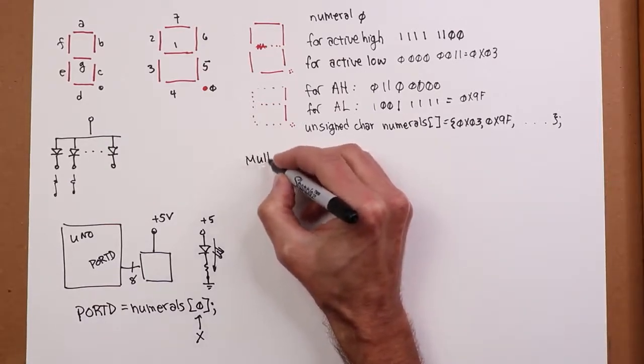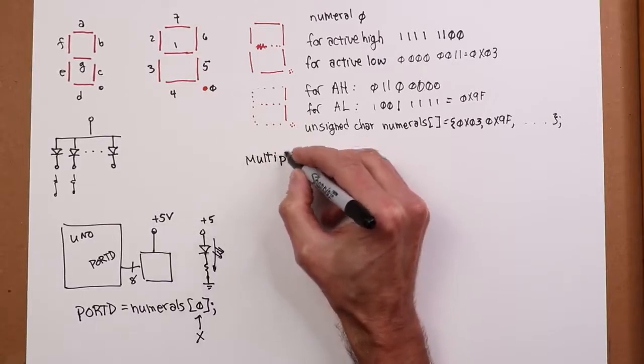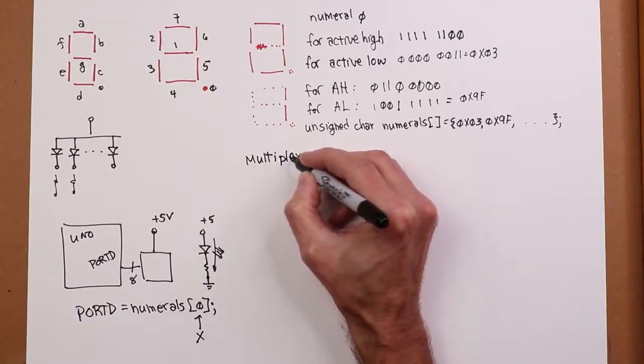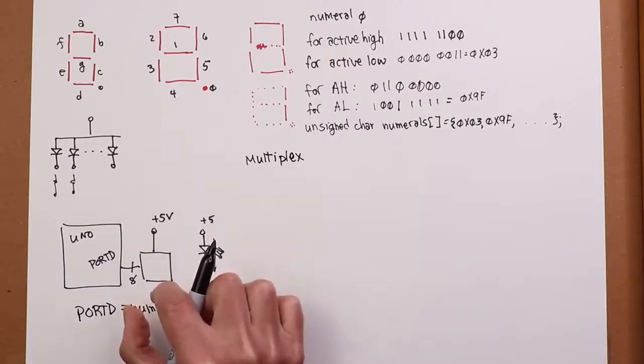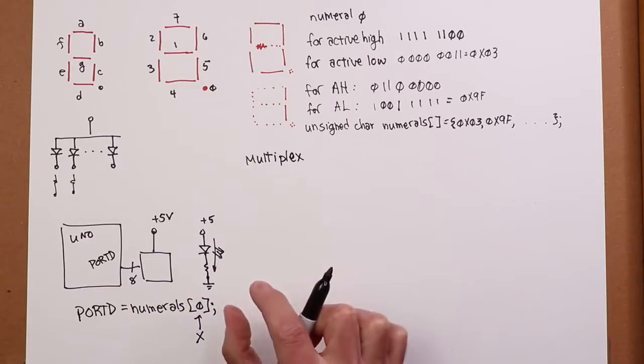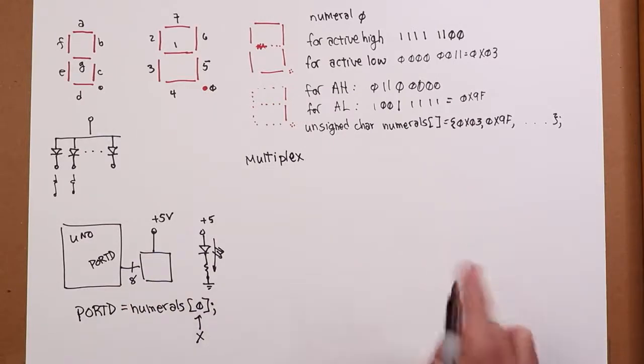Well, what we do to get around this is to multiplex. We do a time domain multiplex. What does that mean, time domain multiplex? It means I light up a digit for a short period of time, a few milliseconds. I light up the next digit, same thing, light up the third digit, and I just keep doing that over and over and over and over again.